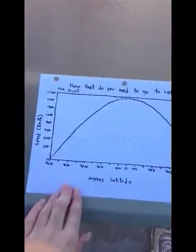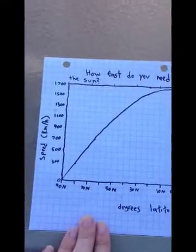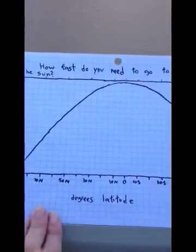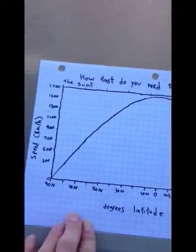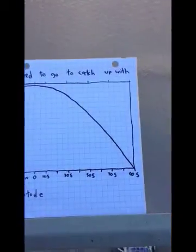And right here is a graph showing you how fast you need to go to stay with the sun depending on how far you are from the equator. Now the y-axis is how fast you would need to go.